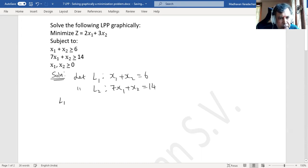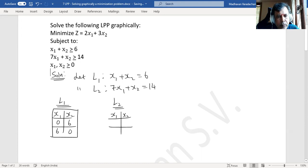Now let us find out the coordinates for L1. Substituting x₁ as 0, x₂ we will get 6. If I put x₂ as 0, then x₁ I will get 6. Now line 2. If I put x₁ as 0, x₂ will be 14. Now if I put x₂ as 0, 7x₁ = 14 means x₁ is 2.